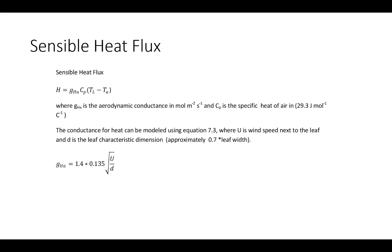Sensible heat flux for a leaf is modeled using conductance rather than resistance — one is simply the reciprocal of the other — in units of moles per meter squared per second, which is common in plant physiology rather than the seconds per meter units used by micrometeorologists. Aerodynamic conductance of the leaf is modeled as a function of leaf size and wind speed, using the characteristic dimension D, which is about 0.7 times the leaf width.